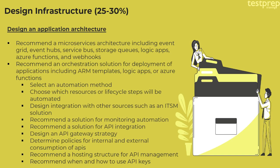Number four: Design an Application Architecture, divided into two parts. First, recommend a microservices architecture including event grid, event hubs, service bus, storage queues, logic apps, Azure Functions, and webhooks. Second, recommend an orchestration solution for deployment of applications including ARM templates, logic apps, or Azure Functions. This includes nine sub-parts: select an automation method; choose which resources or lifecycle steps will be automated; design integration with other sources such as an ITSM solution; recommend a solution for monitoring automation; recommend a solution for API integration; design an API gateway strategy; determine policies for internal and external consumption of APIs; recommend a hosting structure for API management; recommend when and how to use API keys.